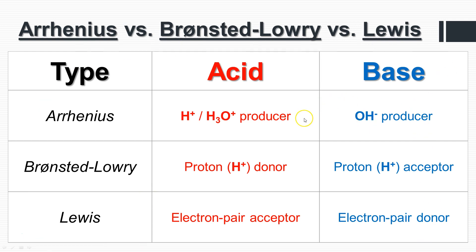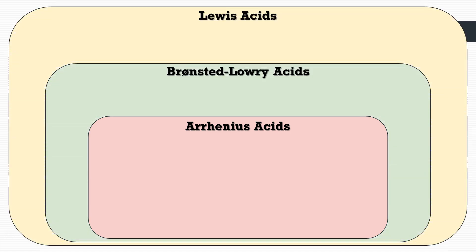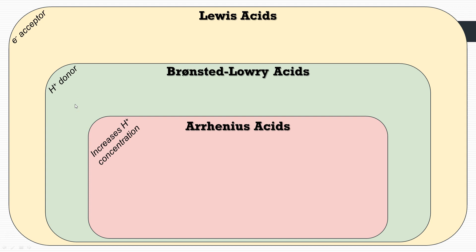Make sure you have these summarized. All Arrhenius acids are also Lewis acids, and all Brønsted-Lowry acids are also Lewis acids. The Lewis acid definition is the broadest — it encompasses the others and more. Arrhenius acids increase proton concentration; Brønsted-Lowry acids donate protons; Lewis acids accept electrons.